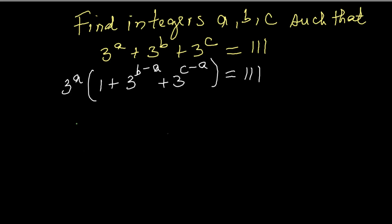111 is divisible by 3, but not by 9. That means the smallest exponent must be 1.